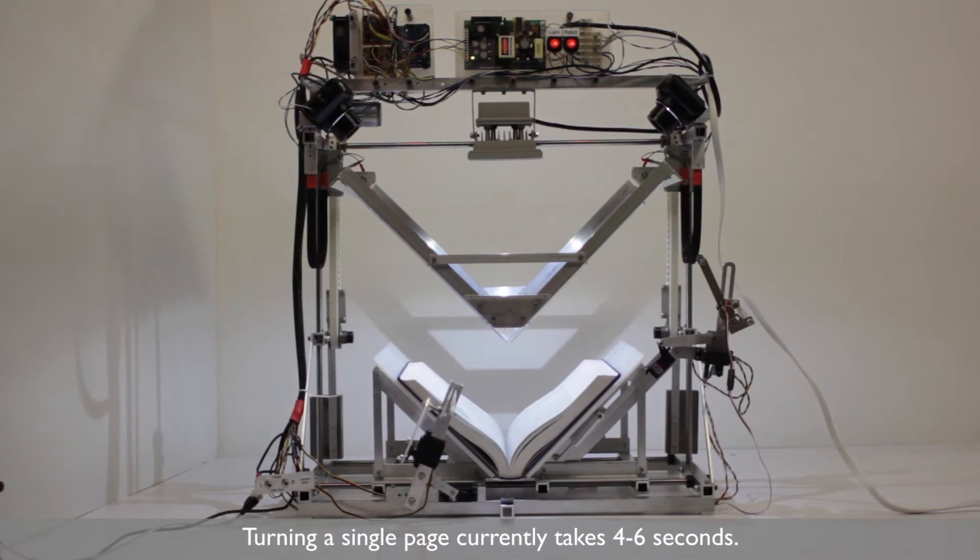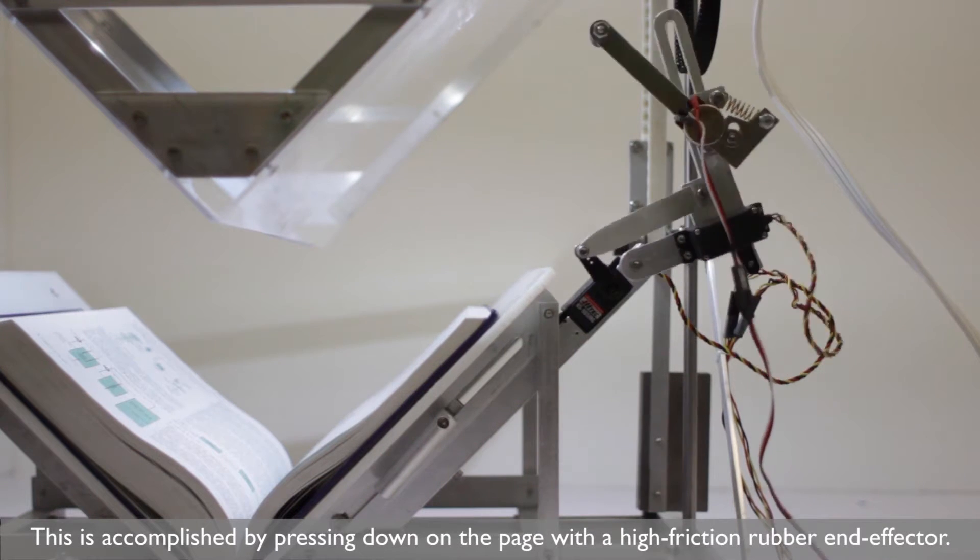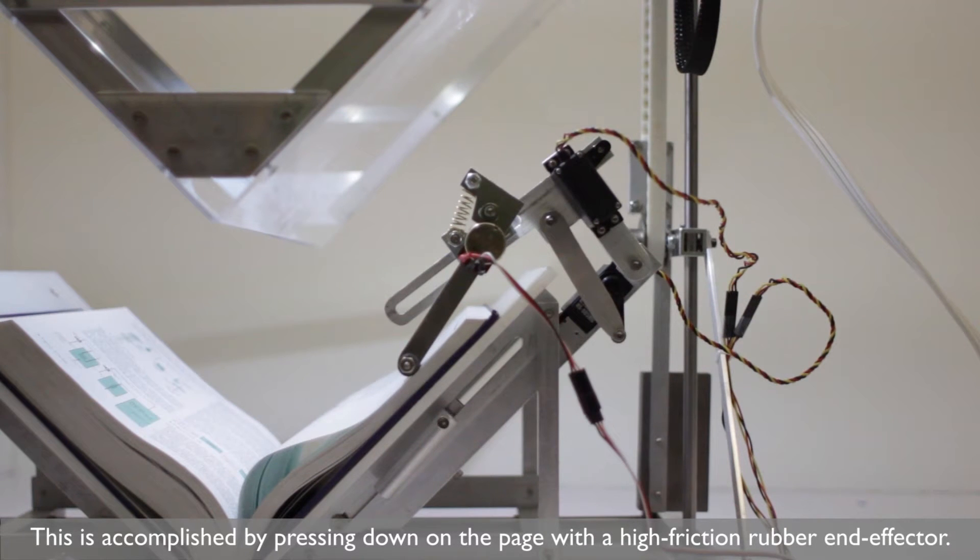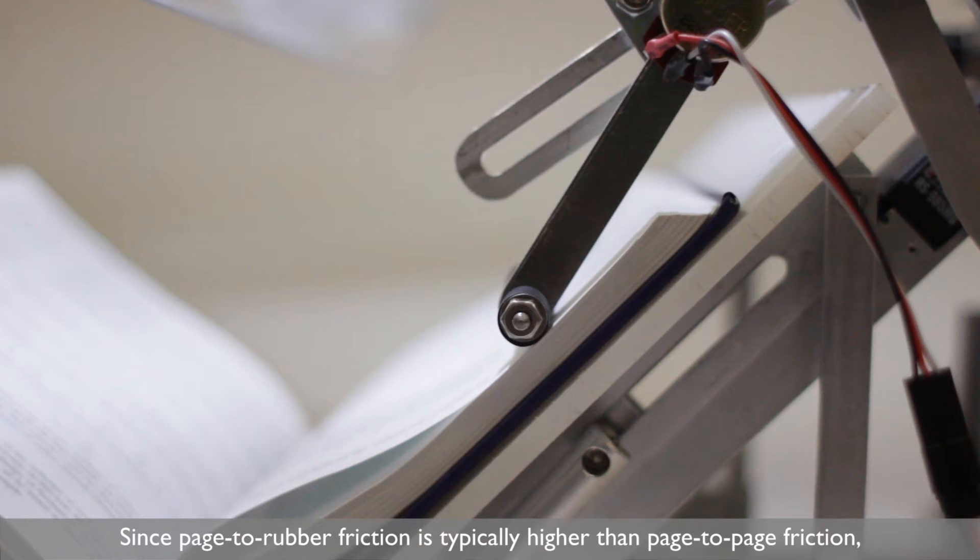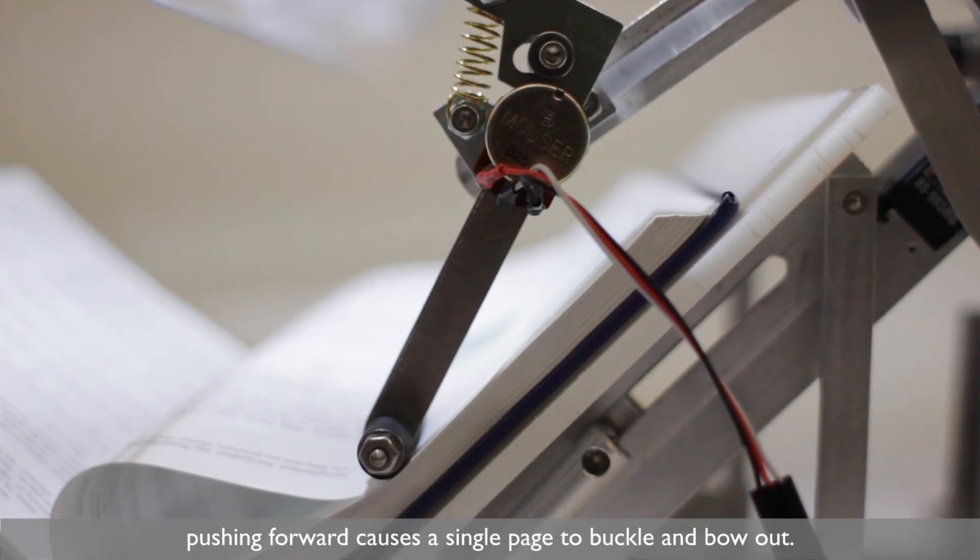Turning a single page currently takes 4-6 seconds. This is accomplished by pressing down on the page with a high friction rubber end effector. Since page-to-rubber friction is typically higher than page-to-page friction, pushing forward causes a single page to buckle and bow out.